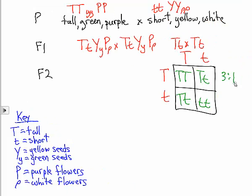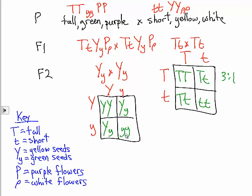Now if we're just concerned about the seed color, then let's ignore the height and the flower color, and our problem becomes, and again, we have the same familiar three to one ratio, three yellow to one green.